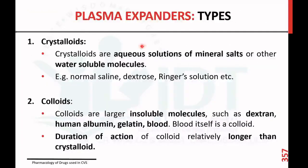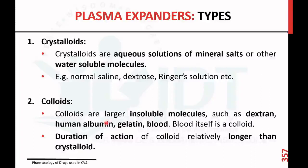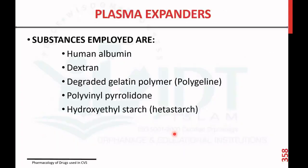There are two types of plasma expanders: crystalloids and colloids. Crystalloids are aqueous solutions of mineral salts or other water-soluble molecules like normal saline, dextrose, and Ringer's solution. Colloids are large insoluble molecules such as dextran, human albumin, gelatin, and blood. The duration of action of colloidal plasma expanders will be longer than crystalloids.